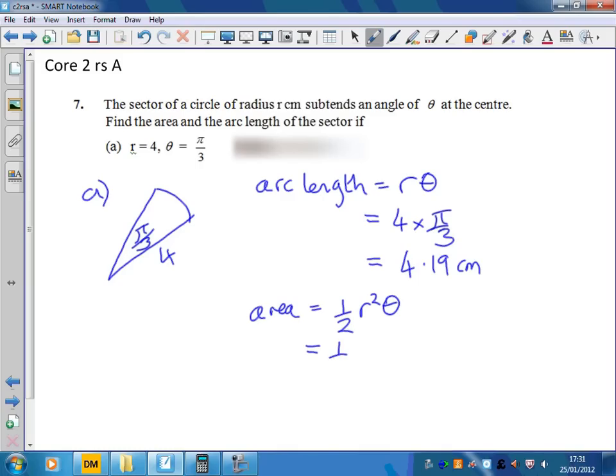Now we just do a half times 4 squared times pi over 3, and typing that into your calculator gives us 8.38 centimeters squared. You'll need to use the s-to-d button to get it out as a decimal.